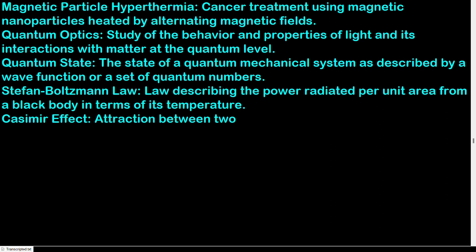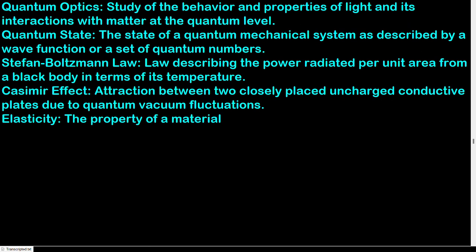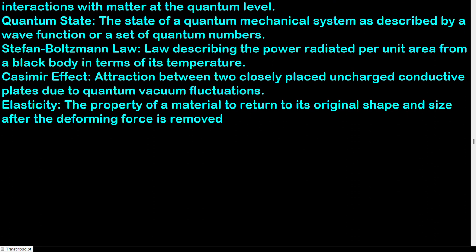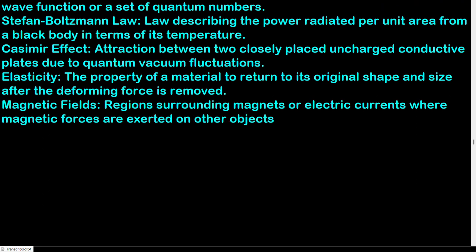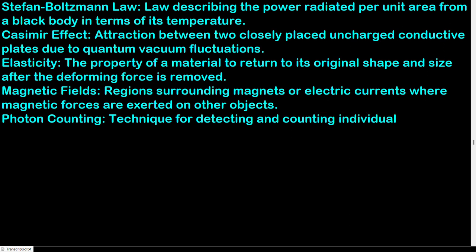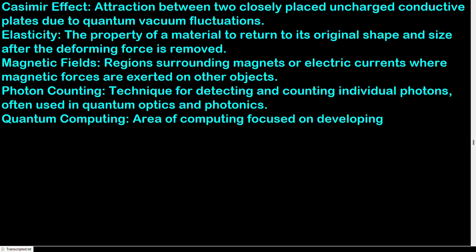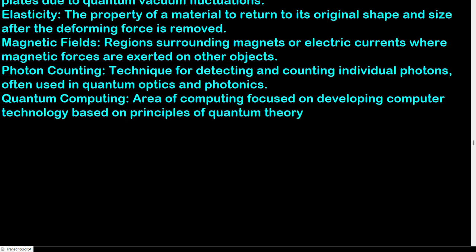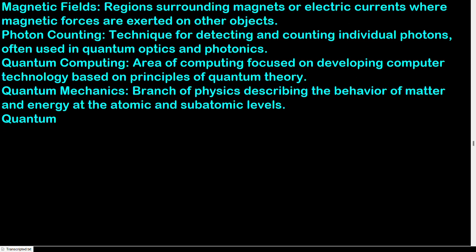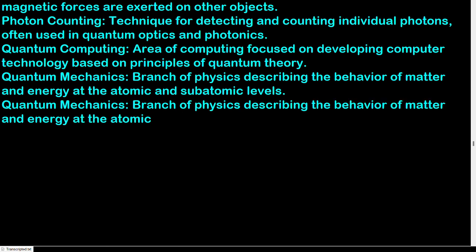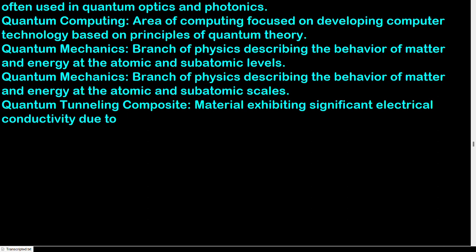Casimir effect: attraction between two closely placed uncharged conductive plates due to quantum vacuum fluctuations. Elasticity: the property of a material to return to its original shape and size after the deforming force is removed. Magnetic fields: regions surrounding magnets or electric currents where magnetic forces are exerted on other objects. Photon counting: technique for detecting and counting individual photons, often used in quantum optics and photonics. Quantum computing: area of computing focused on developing computer technology based on principles of quantum theory. Quantum mechanics: branch of physics describing the behavior of matter and energy at the atomic and subatomic levels. Quantum tunneling composite: material exhibiting significant electrical conductivity due to quantum tunneling effect.